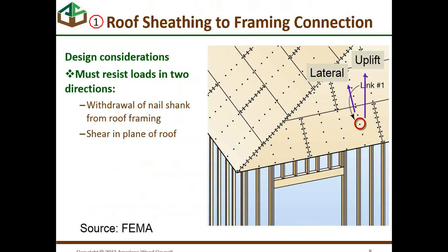Let's look at connection one. The first connection in the load path is the roof sheathing connection. This connection is typically made with a nail, and there are two loads on this nail: an uplift load and a lateral load. In residential design, we frequently assume that the roof diaphragm transfers lateral loads across the roof. So there is uplift or withdrawal at the sheathing-to-nail connection, and there's shear in the plane of the roof.